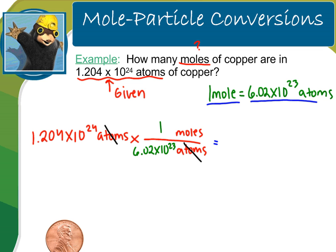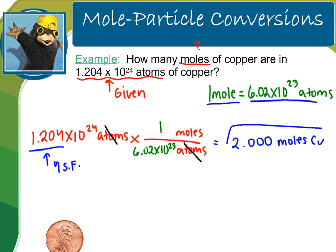Putting this into my calculator gives me the answer 2. Remember, we round to the correct number of sig figs. In my given I have 4 significant figures, so in my answer I also need 4 significant figures — giving me 2.000 moles of copper. Box your final answer and you're done.